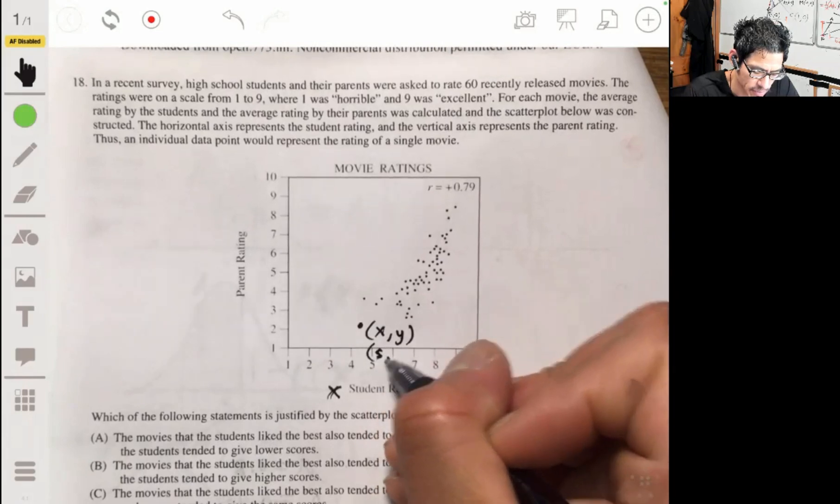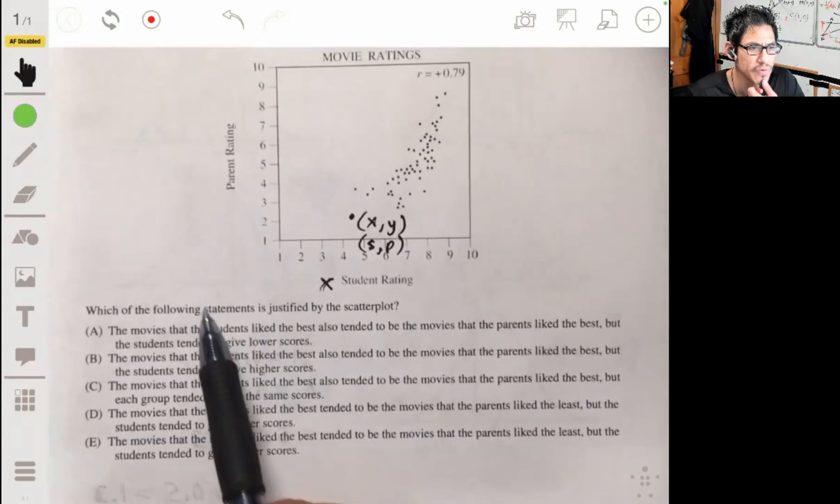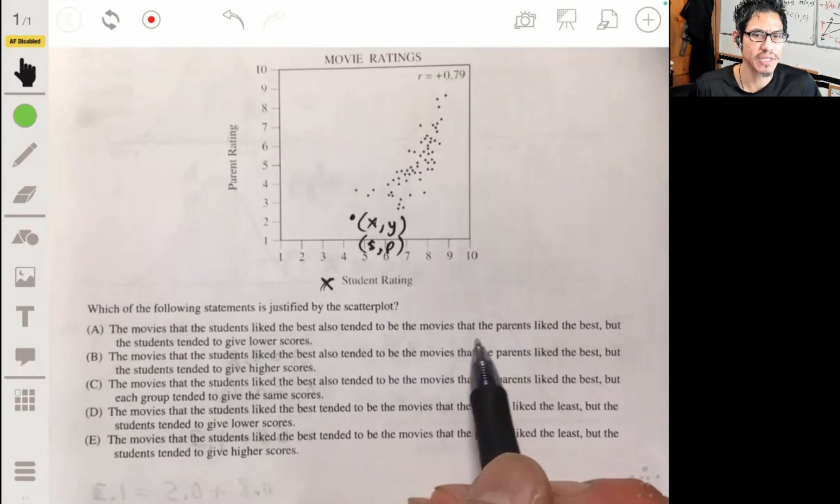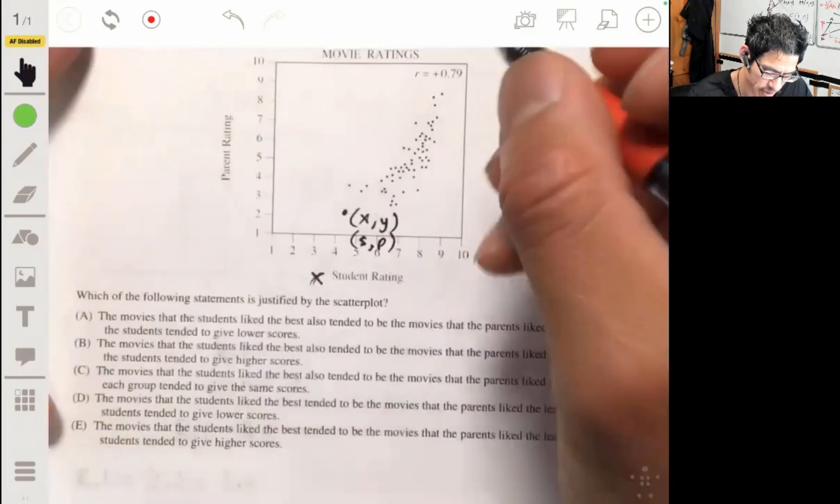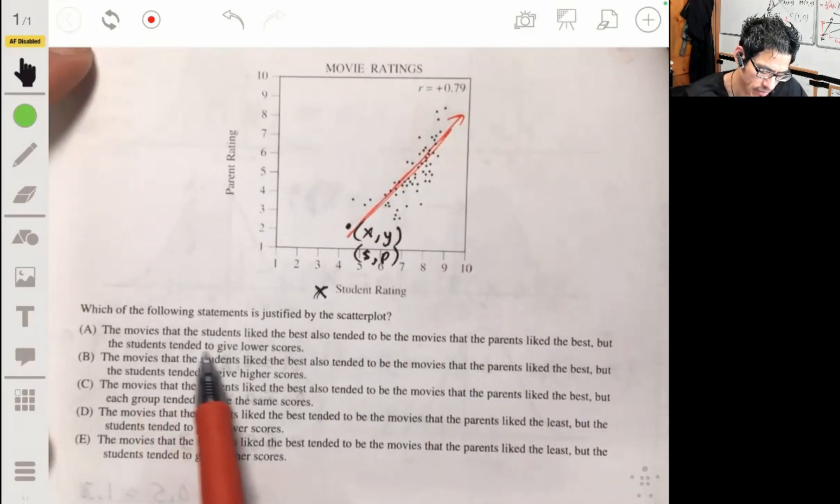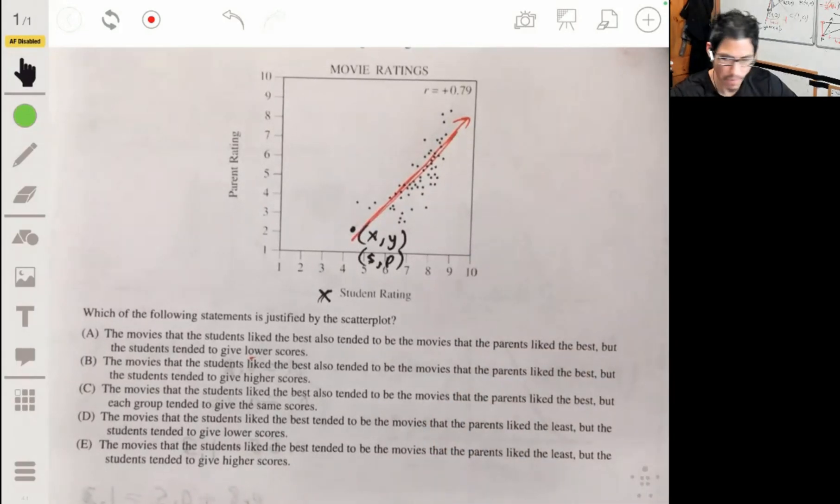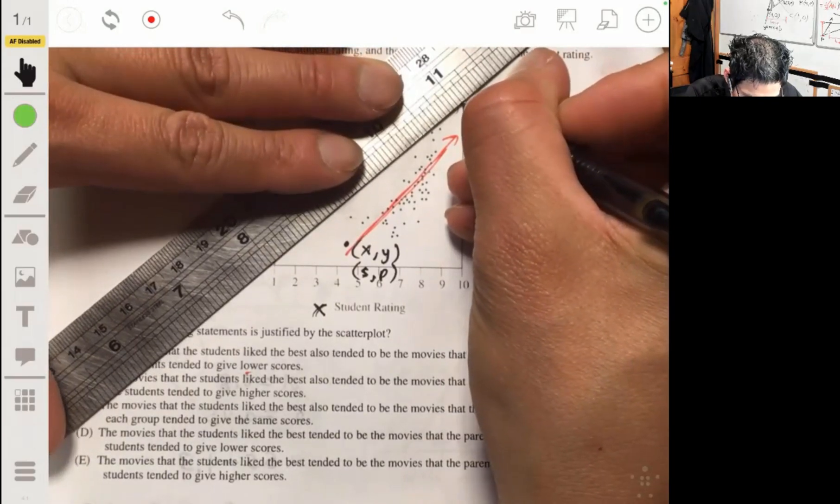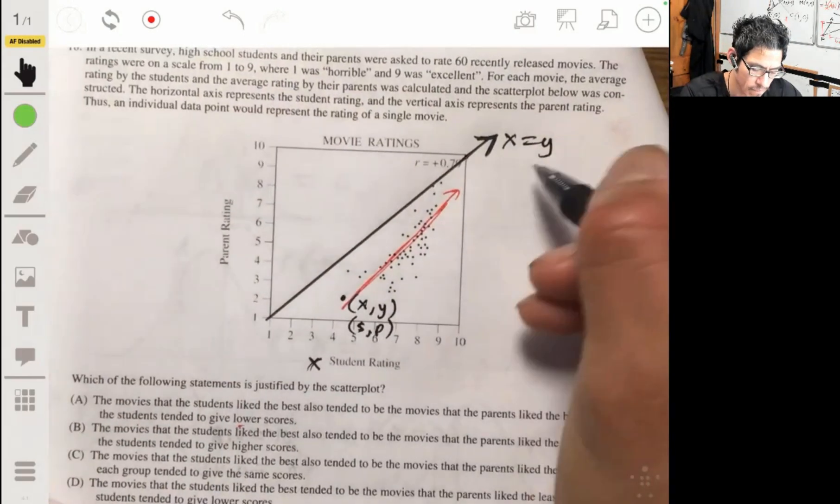So which of these is justified by the scatterplot? The movies that the students like the best also tend to be the movies that the parents like the best. Okay, so that works because we have a positive correlation. As the students rating goes up, the parents rating also goes up. If we draw like a trend line, maybe something like that. Now, the students tend to give lower scores. Well, so let's do this. If they gave the same score every single time, hypothetically speaking, we would have a perfect diagonal. They would lie along this line. This is the line Y equals X or X equals Y.